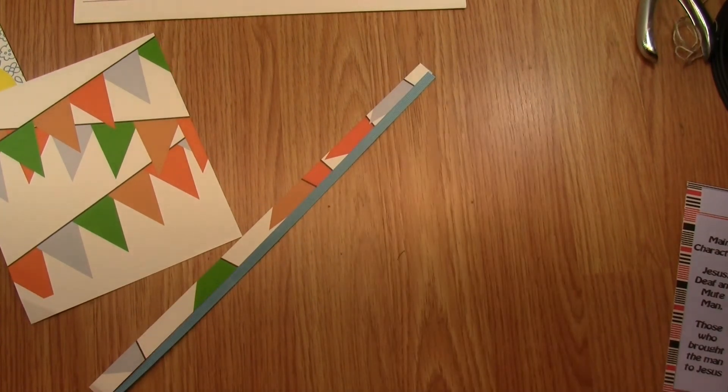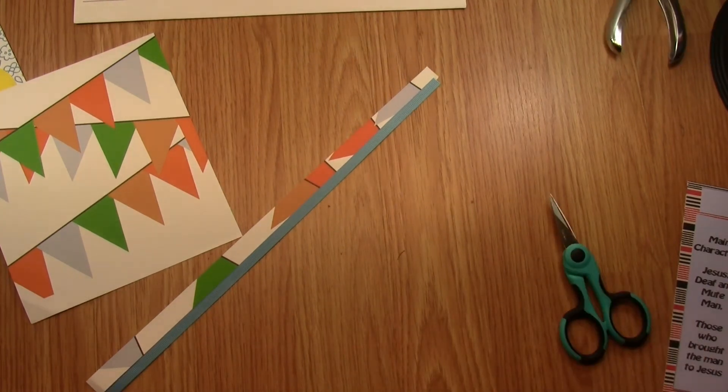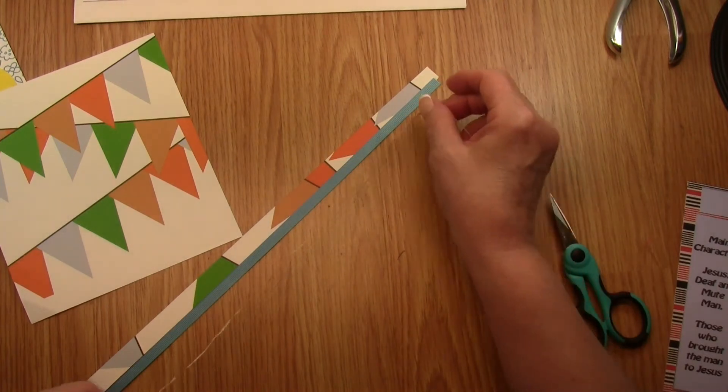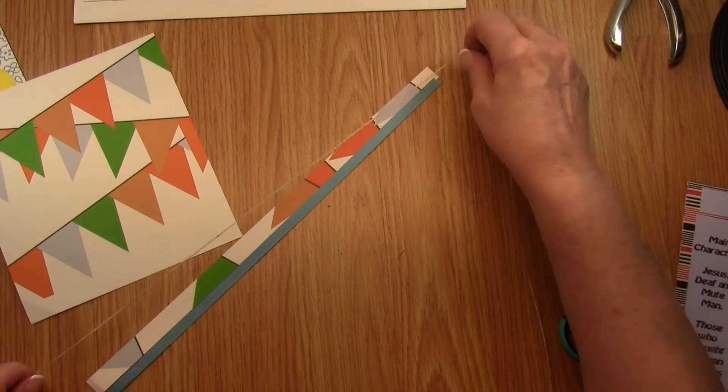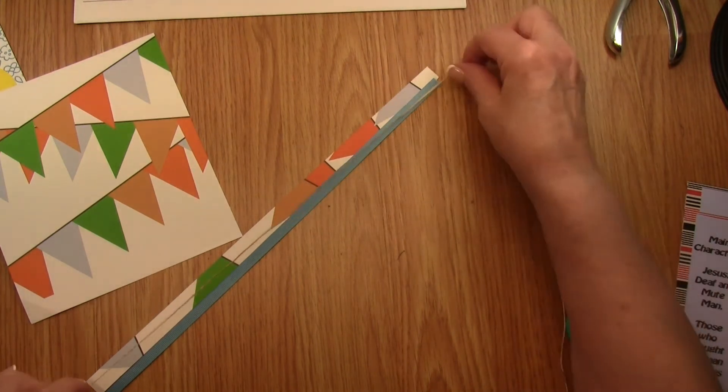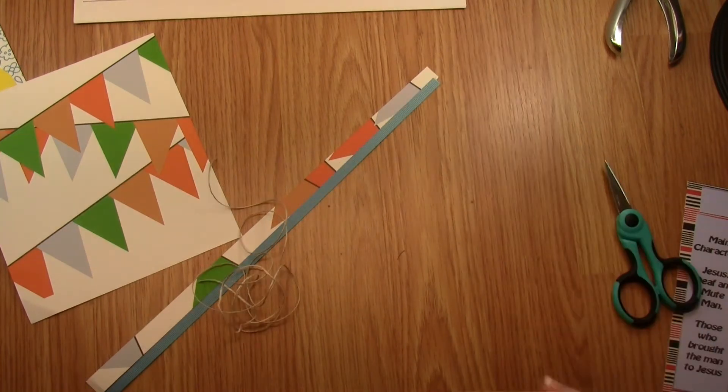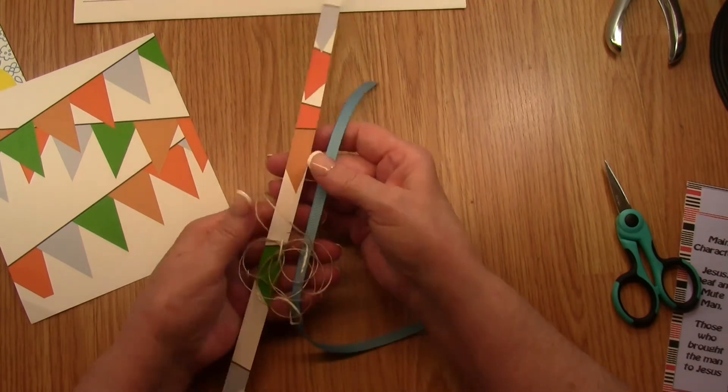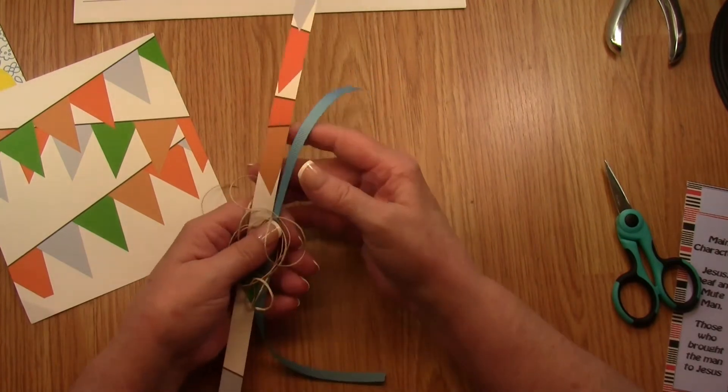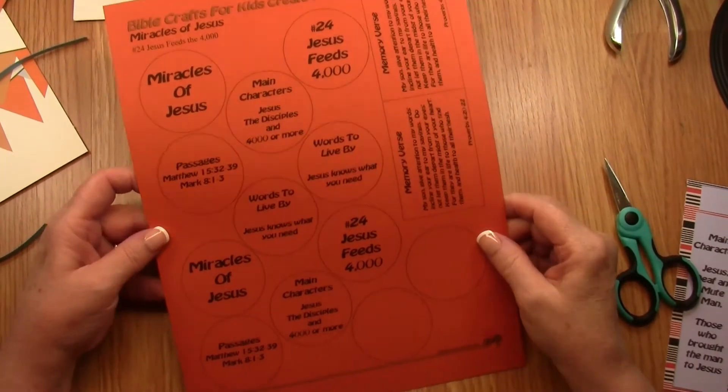Now for the third example, I've got a piece of string and this string I'm going to cut about thirty inches long. Now let's cut our labels, but remember you'll only use one of these systems. I'm just showing you three examples of different ways of doing it.